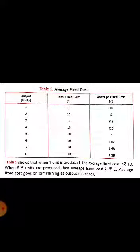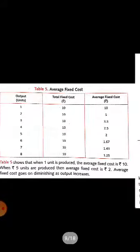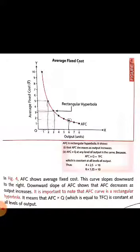If we divide 10 by 1 we get 10, so average fixed cost is 10. If 5 units are produced, total fixed cost of 10 divided by 5 equals 2 — so AFC is 2 per unit. From the table it is clear that as output increases, average fixed cost decreases. The average fixed cost curve is downward sloping from left to right, meaning AFC decreases with increase in output.